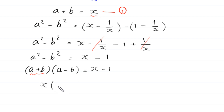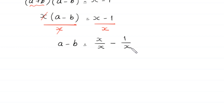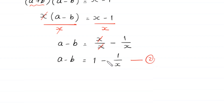So x times (a minus b) equals x minus 1. We divide both sides by x, so x cancels, leaving a minus b equals (x minus 1) over x, which simplifies to 1 minus 1 over x. We call this equation 2.